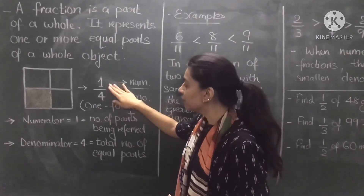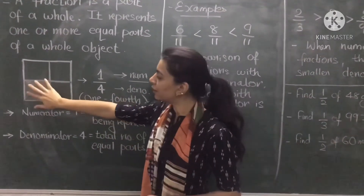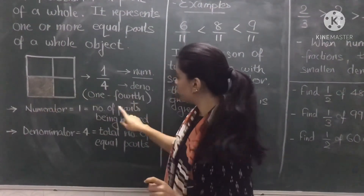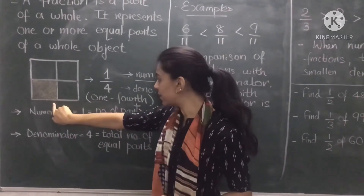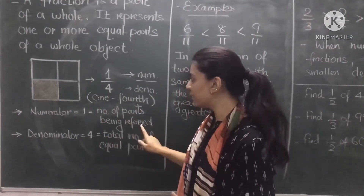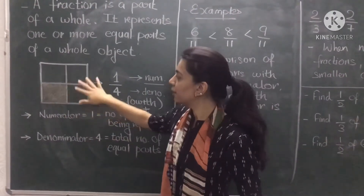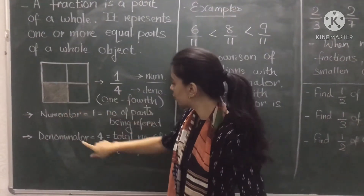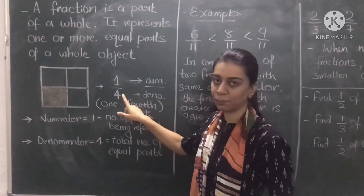The numerator is the number of parts being referred to, which is the colored part. How many colored parts do you see here? Only 1 square. So the numerator is 1. The denominator is the total number of equal parts. There are total 4 squares, so 4 is the total number of equal parts, which is our denominator.